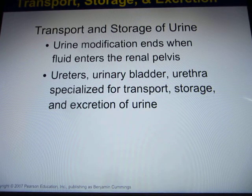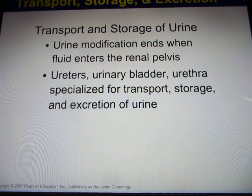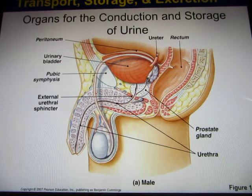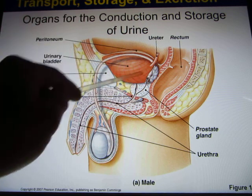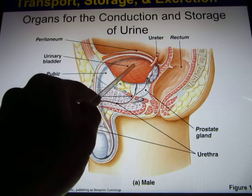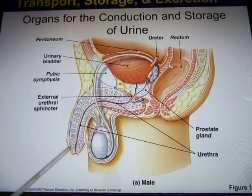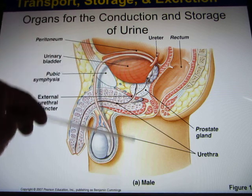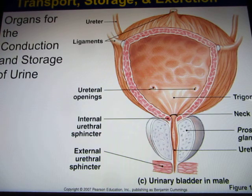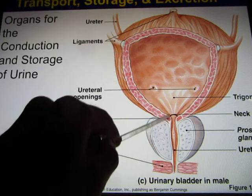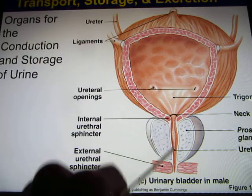The other structures in your renal system are much simpler. Their job is to act as containers or pipes to store urine or pass it out. The bladder is the container for urine, and the urethra carries urine out of the body.